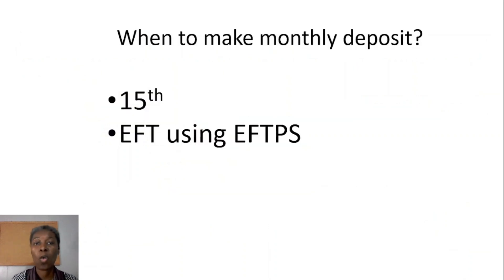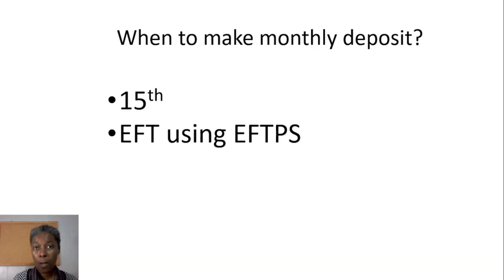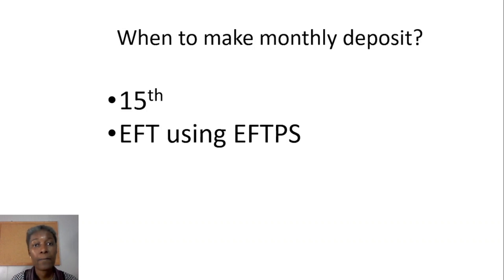For monthly deposits: if you have a tax liability in January — meaning you paid wages in January — you need to deposit that tax liability by February 15th. You make your prior month's tax liability deposit by the 15th of the current month, using EFT — electronic funds transfer — through the EFTPS, Electronic Federal Tax Payment System.